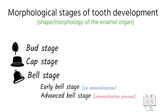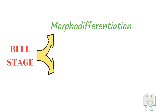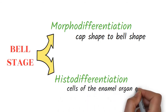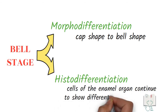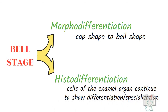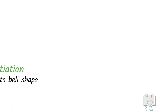Once enamel and dentine deposition begins, the tooth enters the advanced bell stage. Moreover, root formation is also seen. In the bell stage, morpho-differentiation is seen as the shape of the enamel organ changes from cap to bell, and histo-differentiation is seen as the cells of the enamel organ continue to show differentiation or specialization.